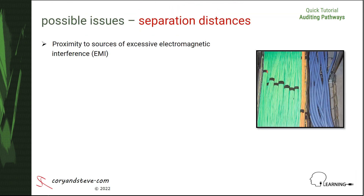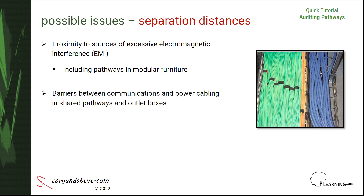There must be a minimum separation of copper network cables from electrical power cables in order to avoid signal errors and possibly code violations. This applies to both cabling pathways and equipment outlet boxes, especially shared ones such as pathways within modular furniture and combined outlet boxes containing both electrical and network outlets. The auditor should verify that physical barriers are present to maintain the minimum recommended separation of 50 millimeters or 2 inches between the power cables and the copper network cables.